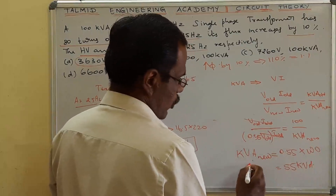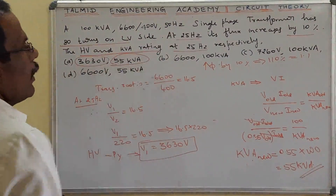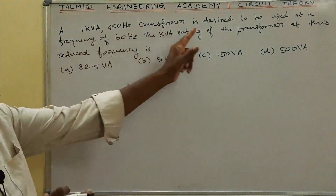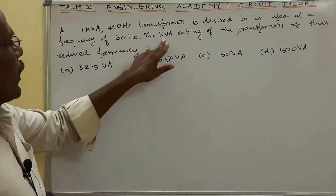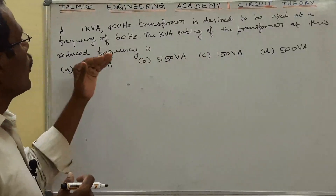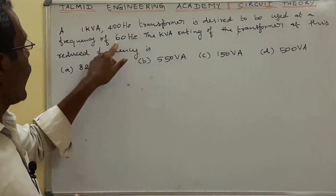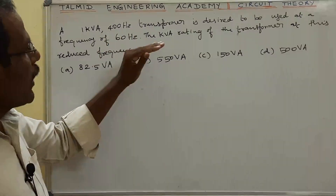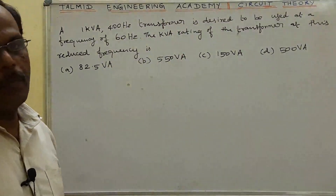That is the answer for kVA — 55 kVA. So option A is the answer. Now the next problem: a 1 kVA, 400 Hz transformer is desired to be used at a frequency of 60 Hz. Find the kVA rating of the transformer at this reduced frequency.